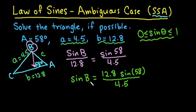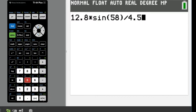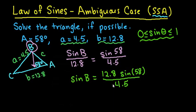So we're going to use this fact right now to see if we can find B. If we can, then we would do the inverse sine of that angle. So I'm going to grab my calculator, and I'm just going to type in the value. So I have 12.8 times sine of 58 divided by 4.5. And when I do that, I get approximately 2.412.